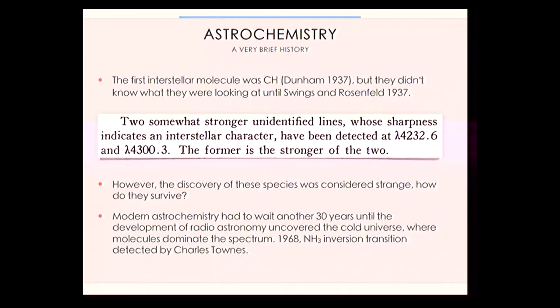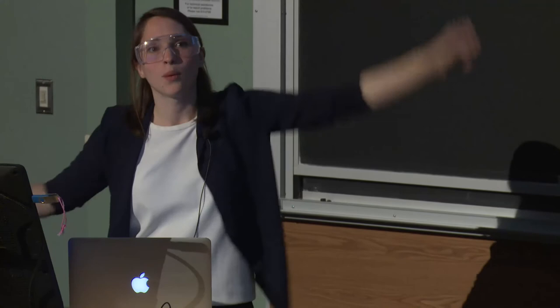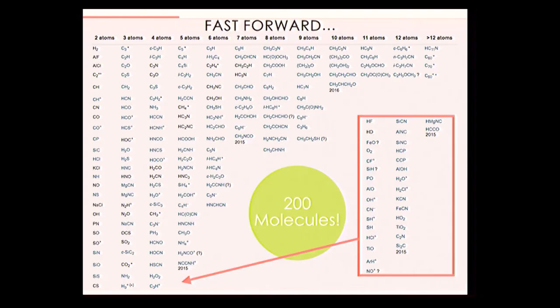For about 30 years, astrochemistry sat in waiting because no one knew why there were molecules in space. Space is supposed to be terribly harsh — lots of radiation, supernovae going off. How can molecules survive? Then radio astronomy hit a boom, enabling observation of a host of molecules in space. Radio astronomy lets you observe gas at very low temperatures, where molecules emit their light primarily through rotation. We went from CH to 200 detected molecules. Space is astrochemically very rich.